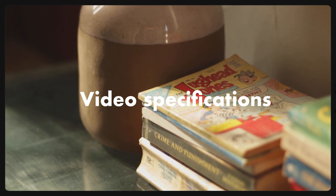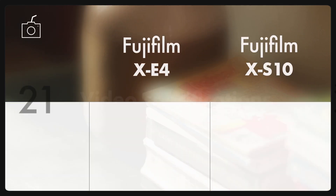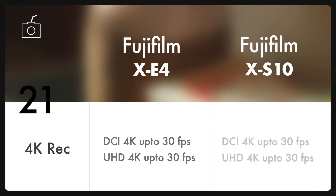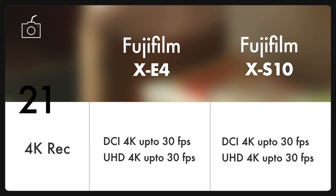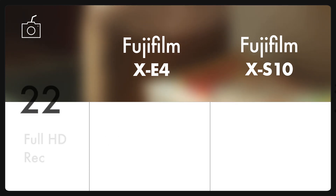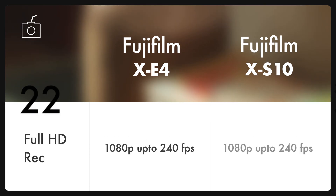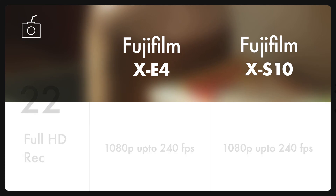Let's have a look at the video specs. Both cameras can record DCI 4K and UHD 4K up to 30 frames per second with a recording limit of up to 30 minutes. Both cameras can also record Full HD 1080p video up to 240 frames per second with a recording limit of 3 minutes.